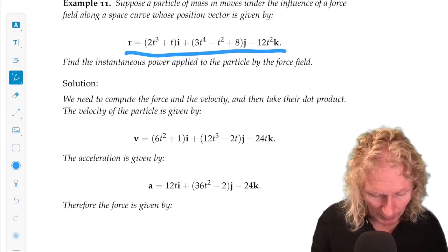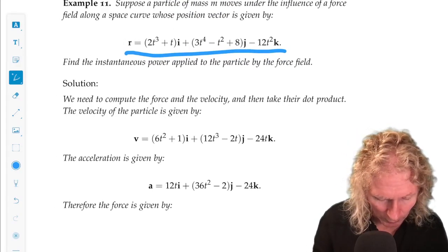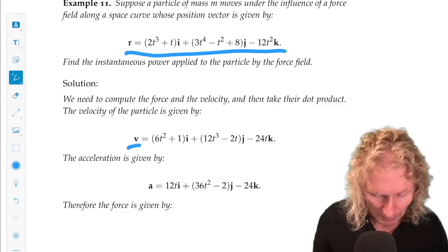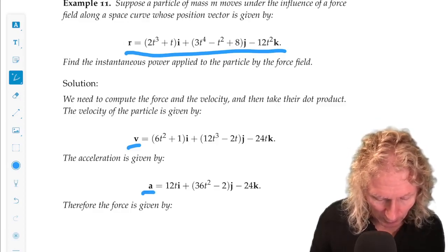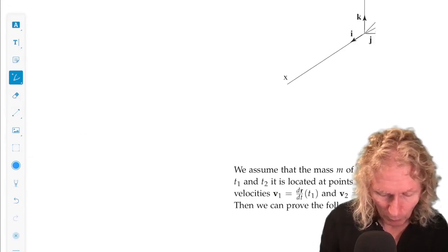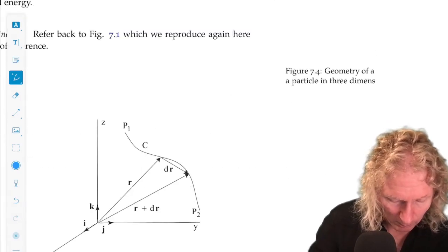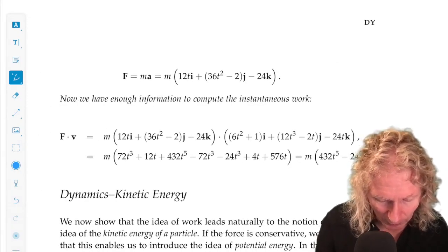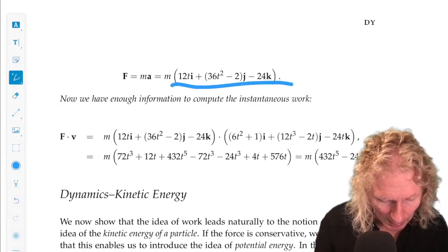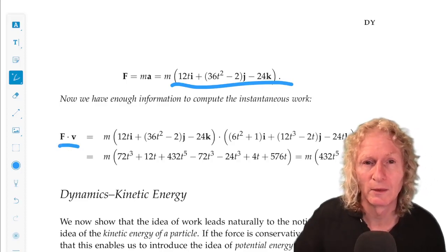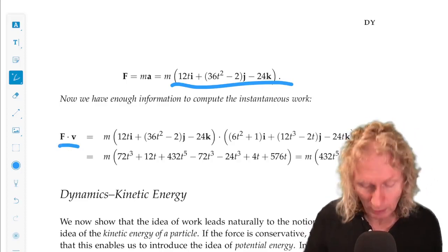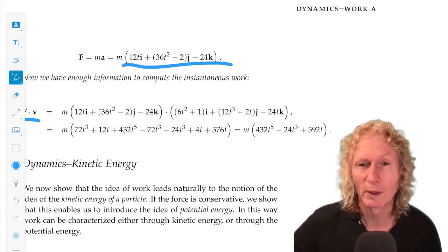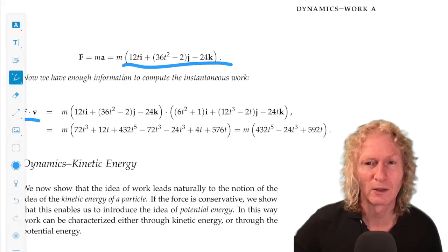So, you do exactly what I said to differentiate once to get the velocity. You know, we need that. Differentiate twice to get the acceleration. Well, then, the force is given by mass times acceleration. And the power is F dot v. And so, we have v, we have F, we compute the dot product. Good little exercise. And we get this expression. That's the power.